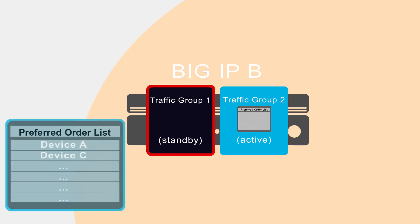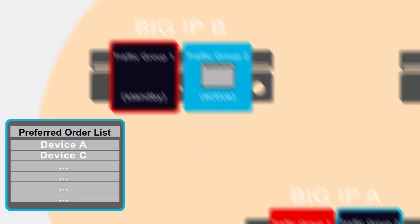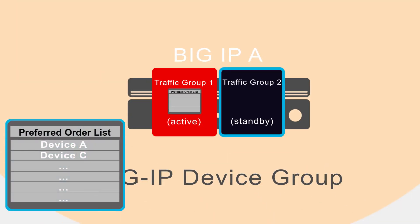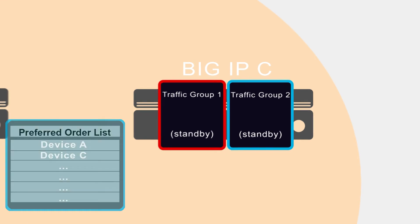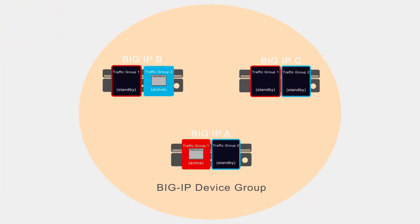For traffic group 2, we want Big IP A to be next active, and if not available, then Big IP C. It turns out that even when you are using the HA groups feature, you can still use a preferred order list instead of HA scores to select the traffic group's next active device.